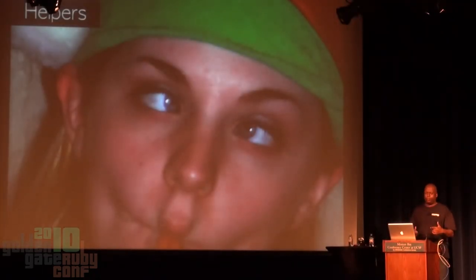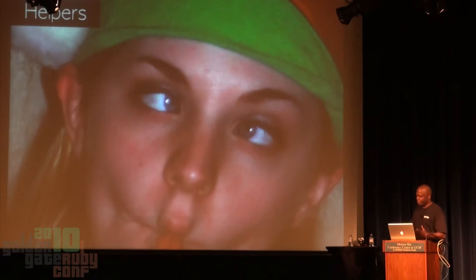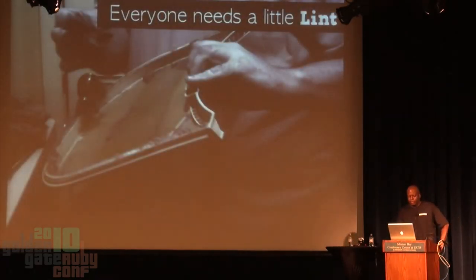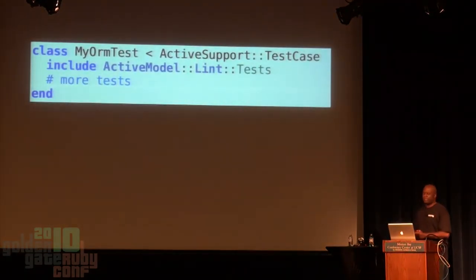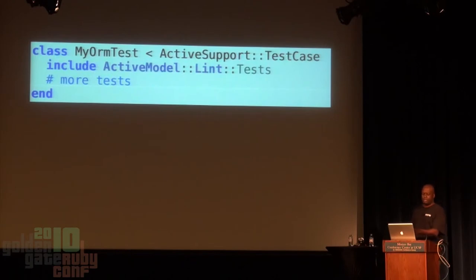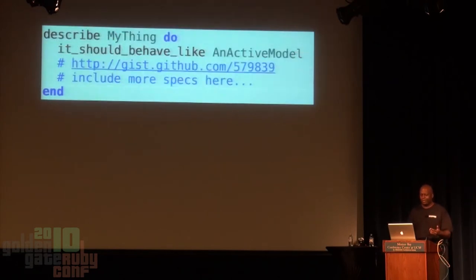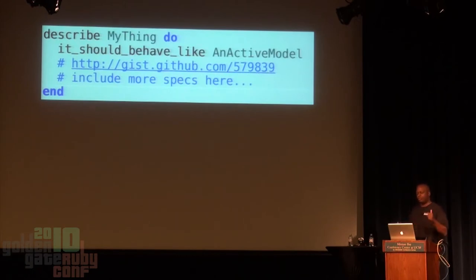So let's talk about the helpers — the stuff that's actually in that Active Model directory. There was talk about lint, and everyone needs a little lint in their life. The Rails guys did us a big favor: if you want something that needs to be Active Model compatible, just include this little module. I also found that there were no lint helpers for RSpec, but someone did write them — I found the code, lost it, and put it up on a Gist. I didn't write it, but it works with RSpec and makes everybody happy.